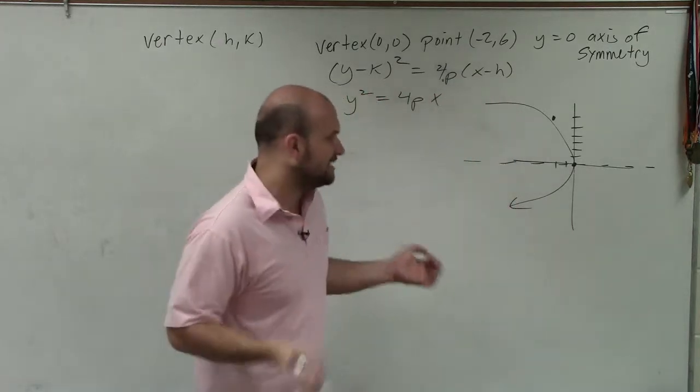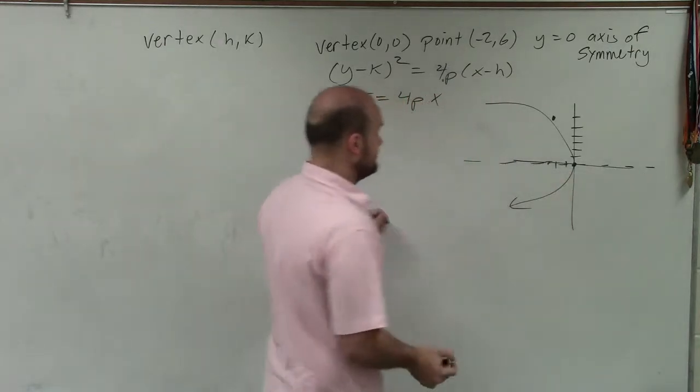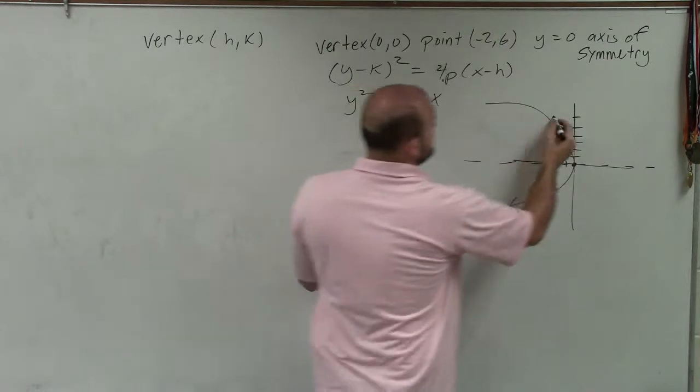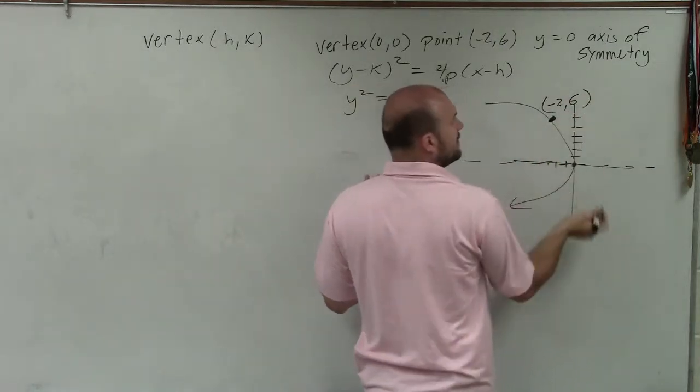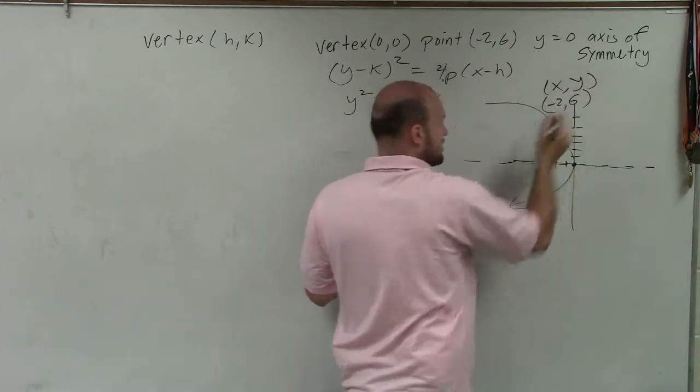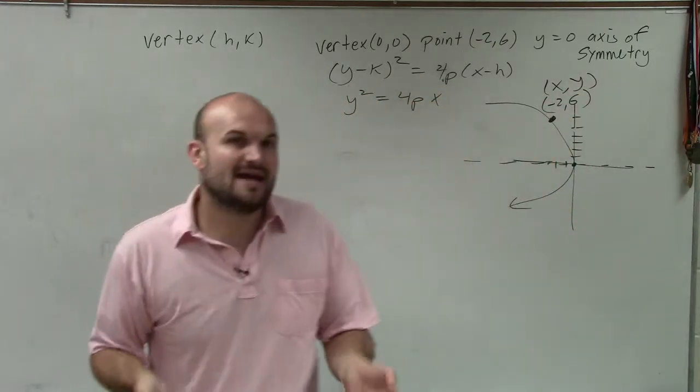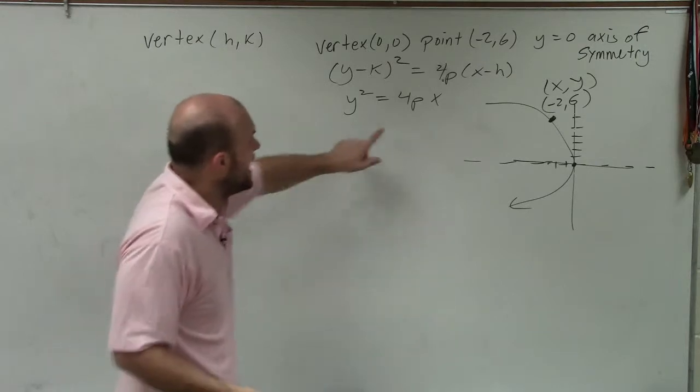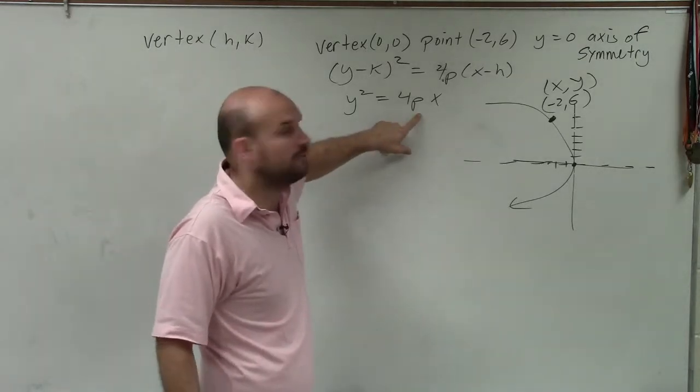But I need to figure out what is my focus. Where is my focus going to be? So the only thing I know is this point, which is negative 2 comma 6. But remember, all points that are on the parabola are made up of an x and a y coordinate. So if I plug in my x and y coordinate into that equation, I can solve for p because that's the only variable I still won't know.